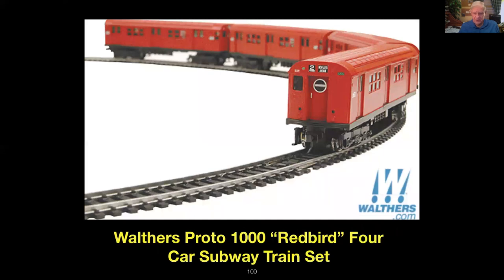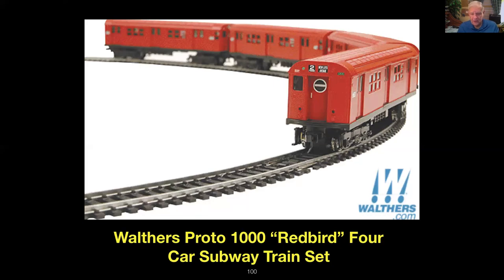Here's a picture of the Walthers Proto 1000 Redbird four-car subway train set. They made some other sets too — one in a dark burgundy like a Tuscan red, and one in dark green. They ran nice and are still available on eBay. If you wanted to run them on an overhead subway system with just a DC transformer, you could do that.